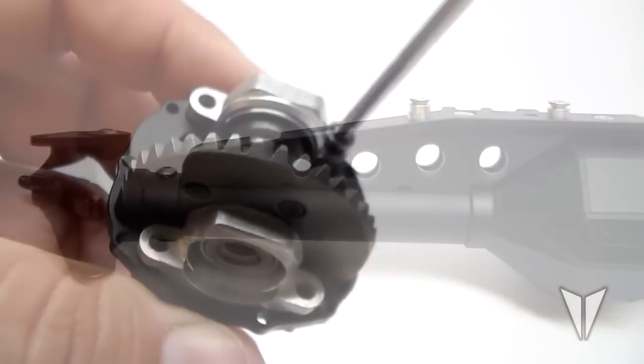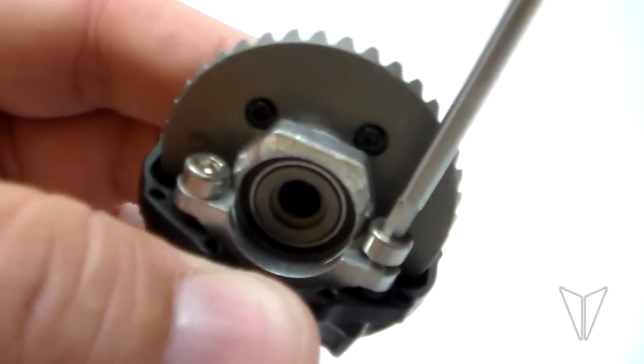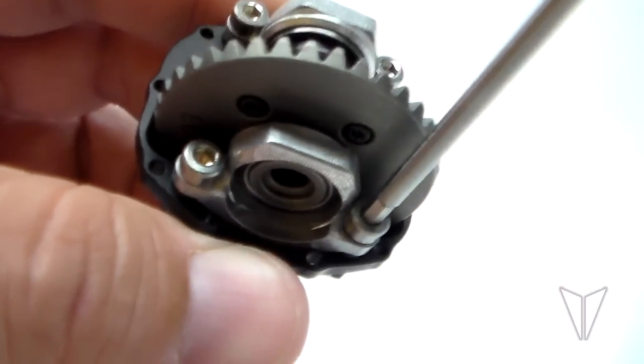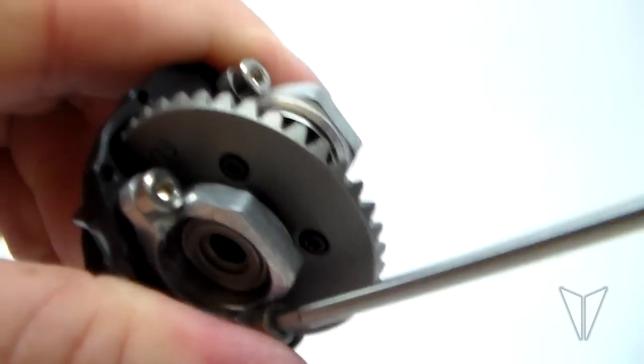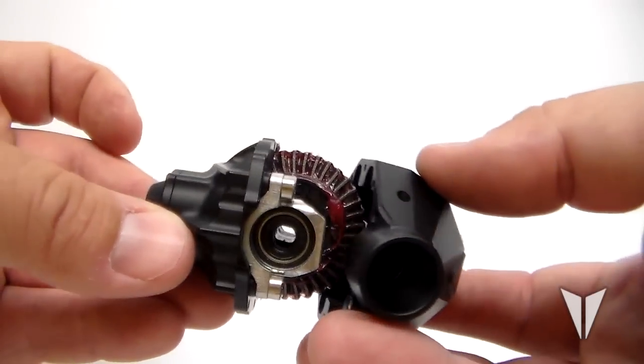Moving on to the rear, it will largely build just like the front with a few minor differences. Complete the pumpkin and third member assembly just like the front. Again note the orientation of the ring gear so your axle spins in the right direction under power.